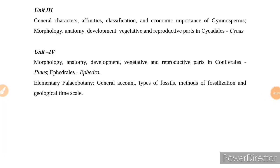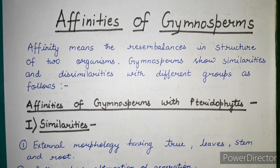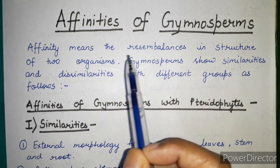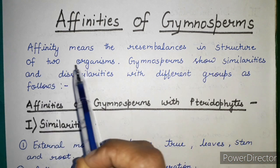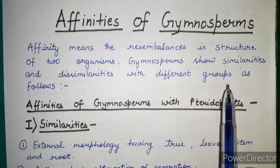Hello everyone, welcome to my channel all about biology. Today we will discuss the affinities of the gymnosperms. In our previous video we discussed the general characteristics of gymnosperms, and in this video we will discuss their affinities. Affinity basically means the rhythmic balance in structure between two organisms — gymnosperms show similarity and dissimilarity with different groups.